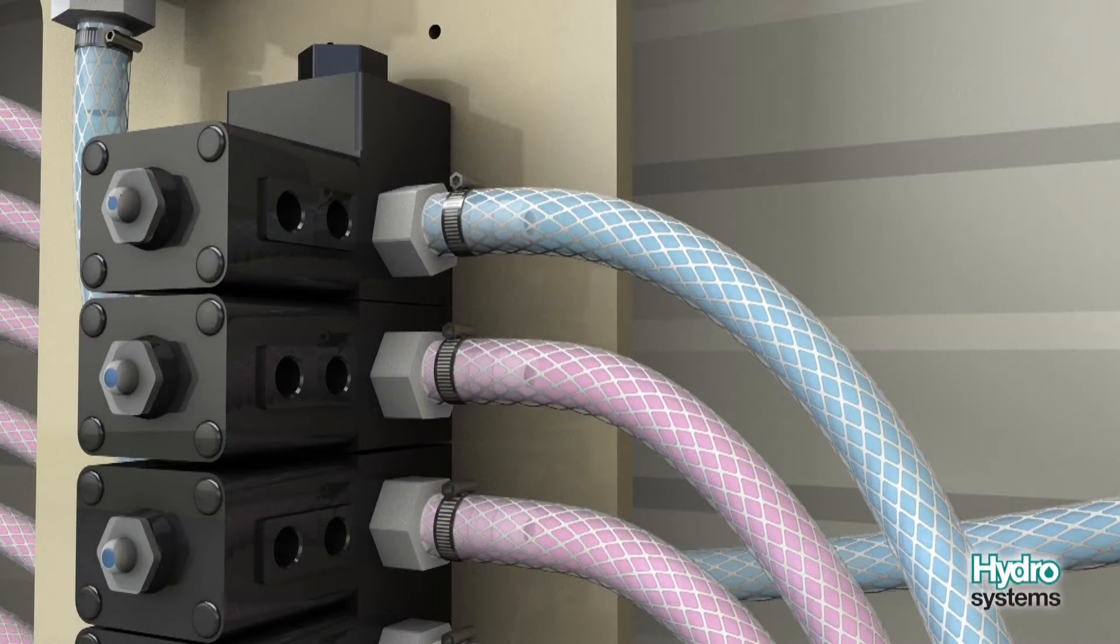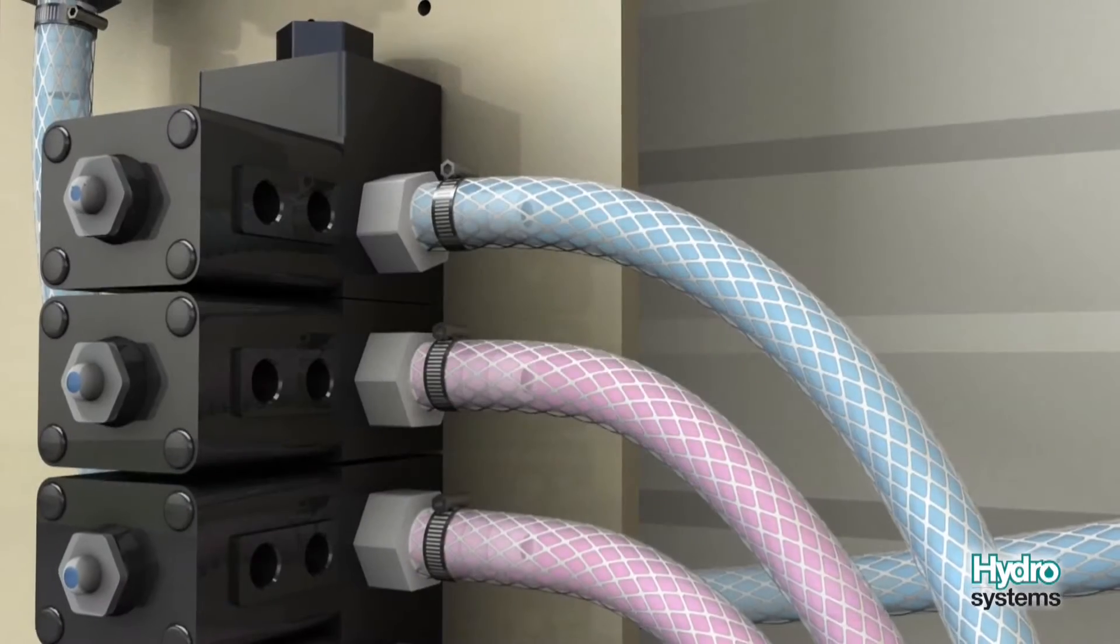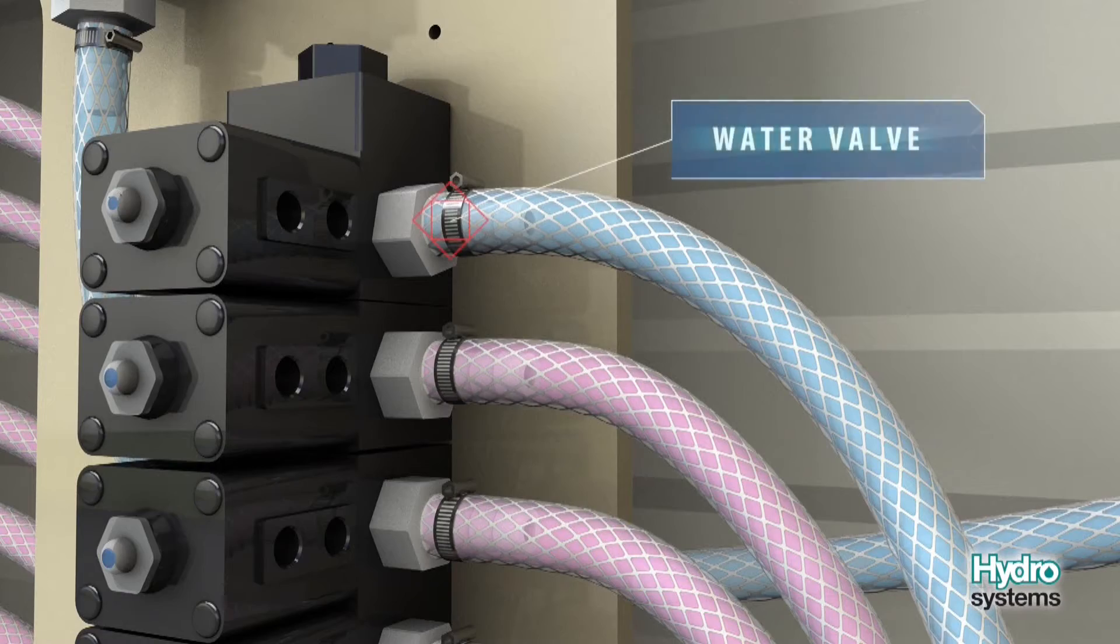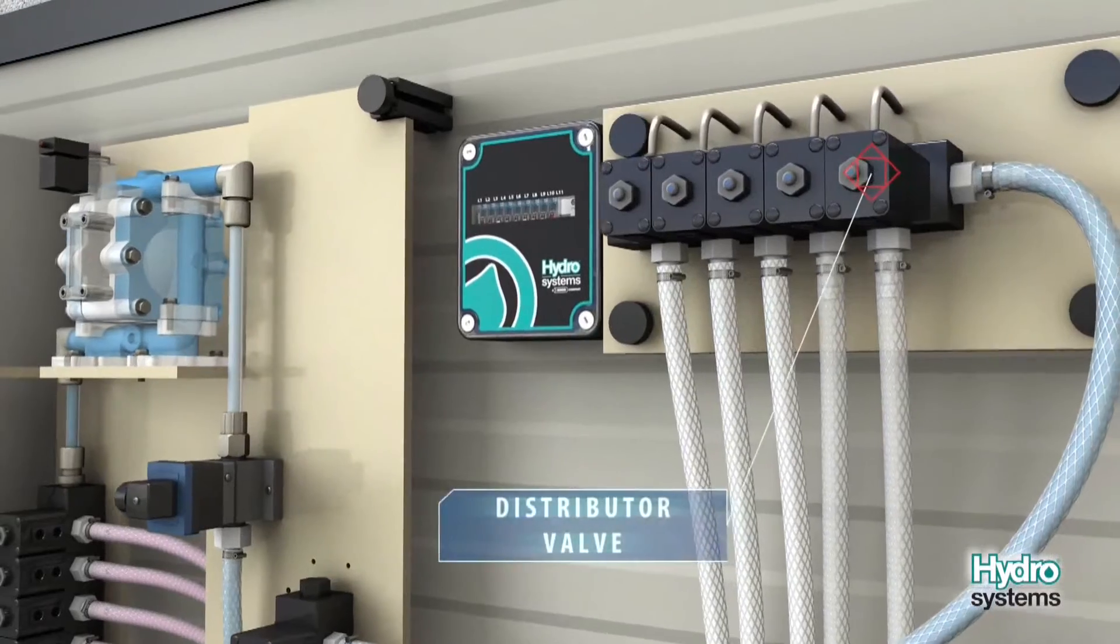At the end of the leak test, the water valve at the collector remains open. Step 2: Water Test. After a successful leak test, it is time for the water test. The water valve at the collector is already open and now the distributor valve associated with the washer is opened.